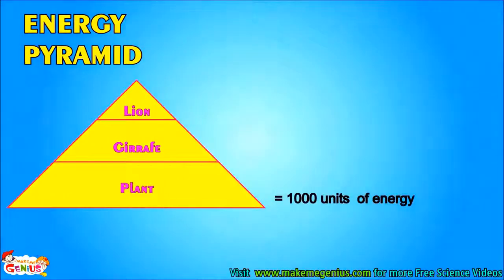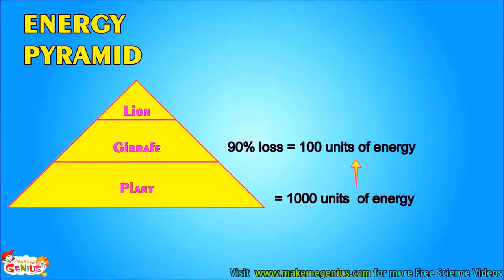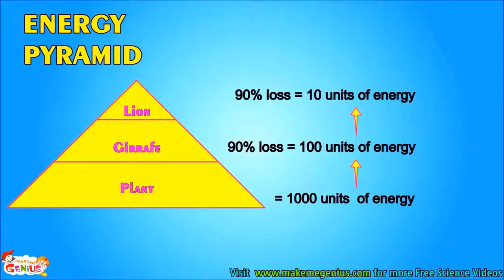To understand the energy pyramid, let's assume plants absorb 1,000 units of energy from the sun. When a giraffe eats the plant, 90% of energy is lost, so the giraffe only gets 10% of that energy — 100 units out of 1,000. When a lion eats the giraffe, 90% of energy is again lost, and the lion gets only 10 units of energy.